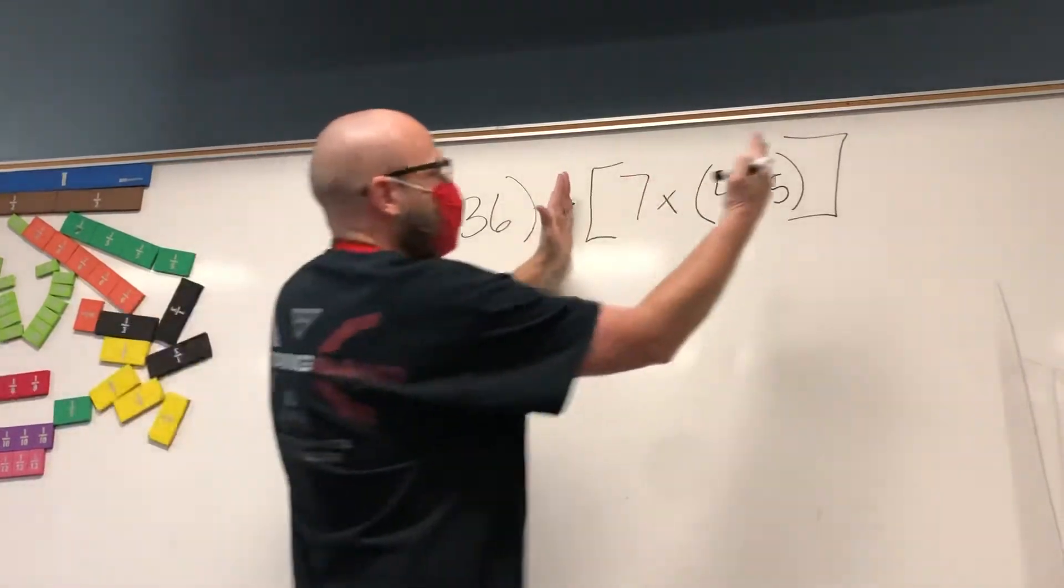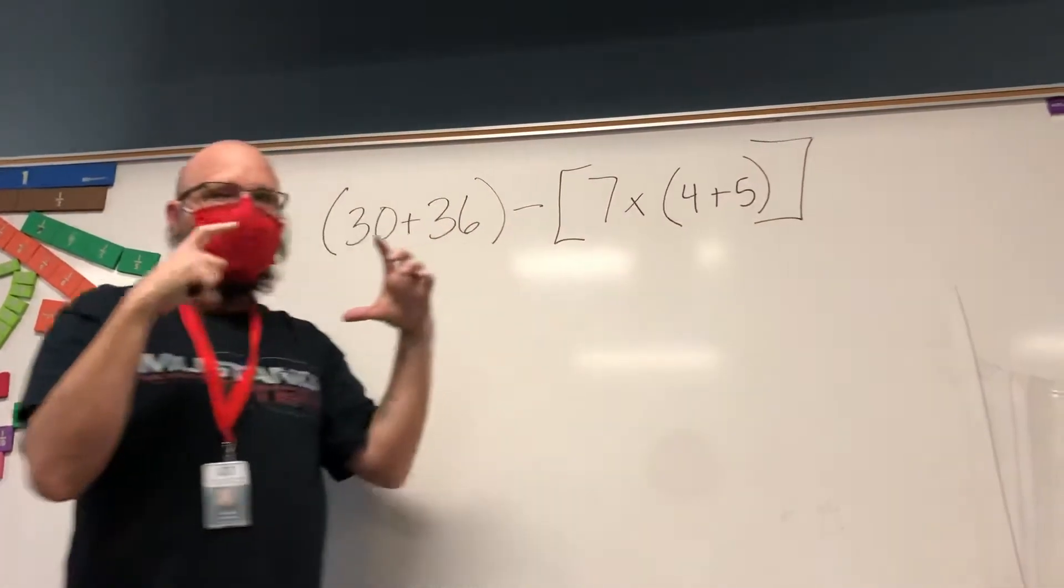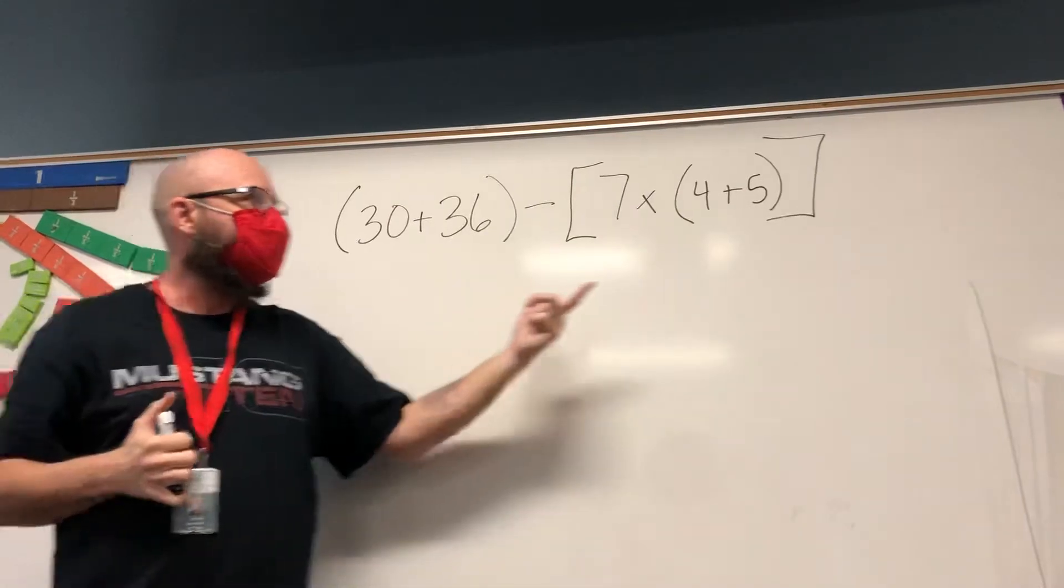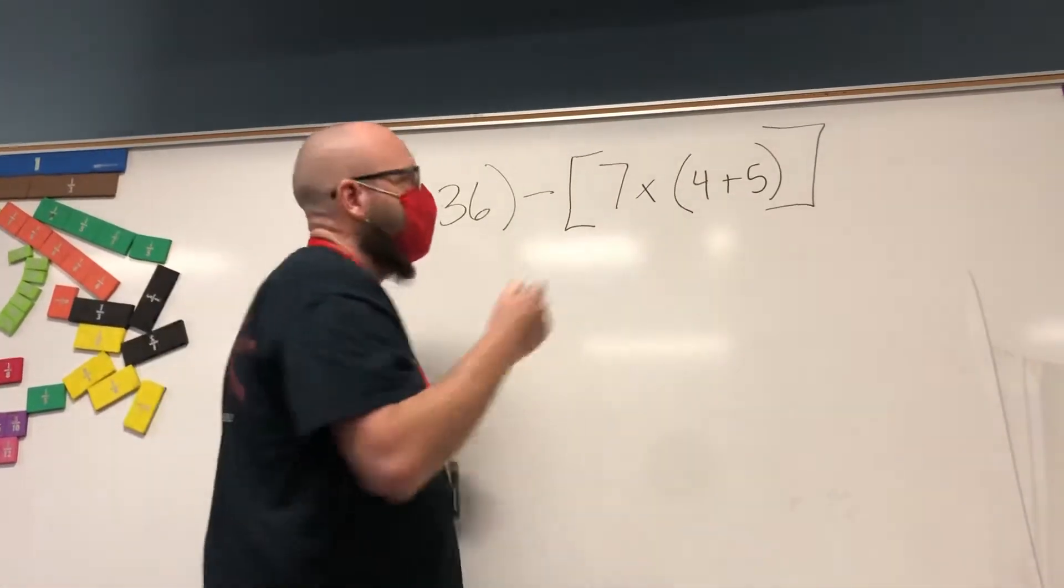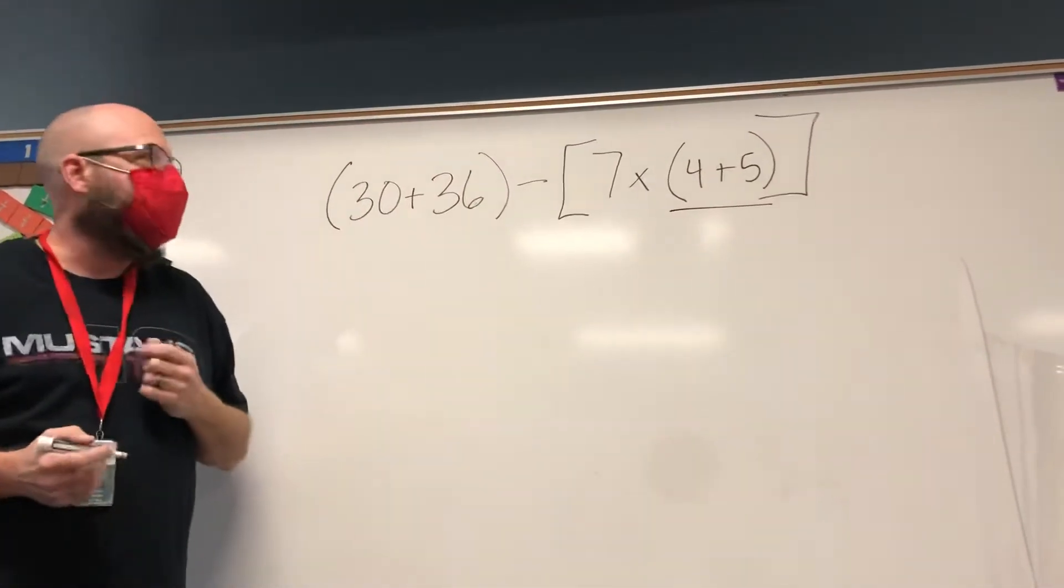Inside the brackets we have 7 times the sum of 4 plus 5. Inside the brackets we have the parentheses, so we're going to start with the parentheses because they're inside the brackets.